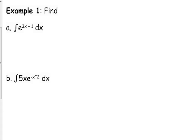If we're looking at this problem here, our u needs to be 3x plus 1, so the derivative of u with respect to x is 3. We do not have a constant of 3 in the problem, so we need to move that to the other side. So we have 1 third du is equal to dx.